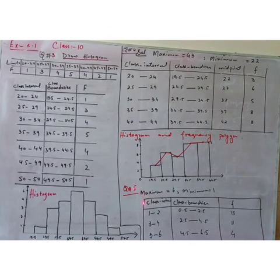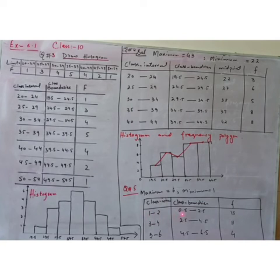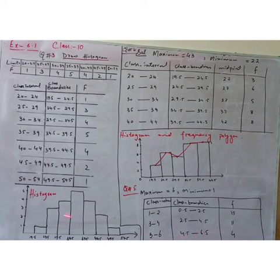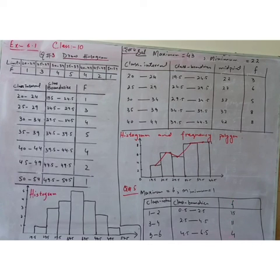To draw the histogram, we first find the class boundaries. Subtracting 0.5 from the lower class limit gives 0.5, and adding 0.5 to the upper gives 2.5. Similarly, the next boundary is 2.5 to 4.5, and the last is 4.5 to 6.5. Now, dear students, you can easily draw the histogram using the method from questions 3 and 4: take class boundaries along the x-axis, corresponding frequencies along the y-axis, and draw adjacent bars. Your exercise 6.1 is completed. Thank you.